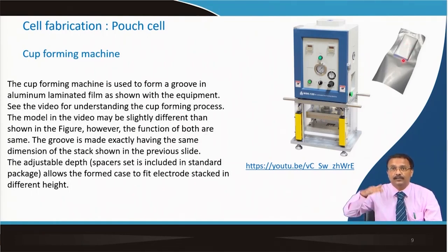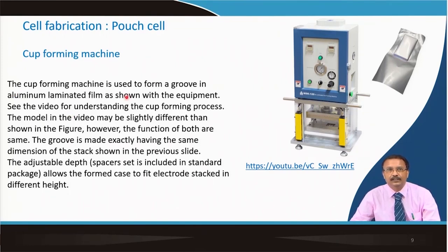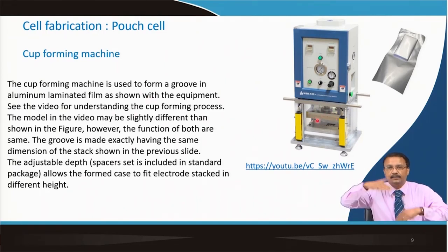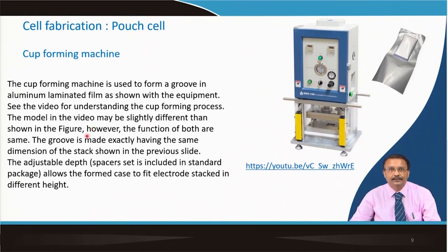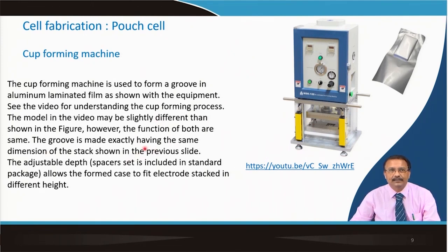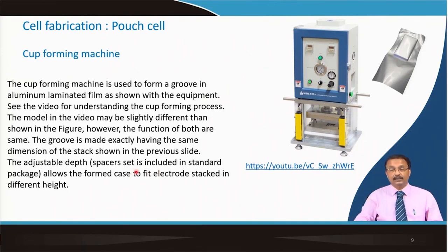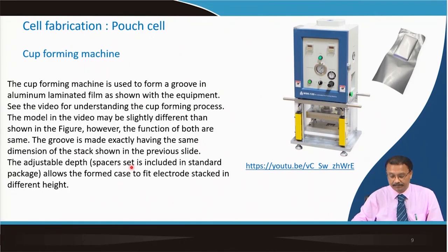Depending on the thickness of the stack, you will have to adjust the depth. This cup forming machine is used to form a groove under the aluminium laminated film. There are two platens and you press it to form the groove. The model in the video may be slightly different, but the groove is made with exactly the same dimensions as the stack so that it fits precisely. An adjustable depth spacer set is included in the standard package so that different stacked layers can be accommodated.